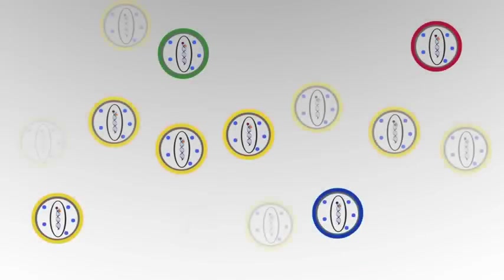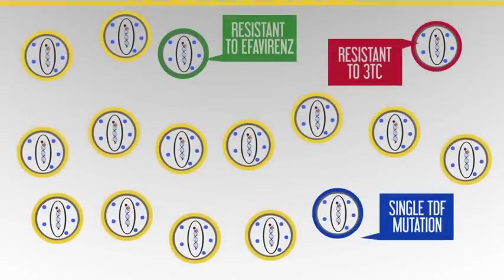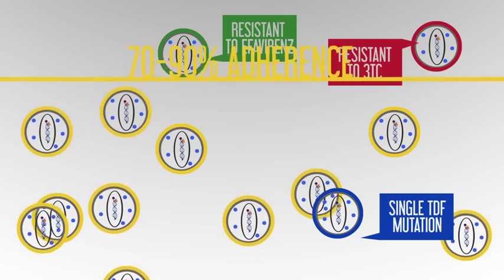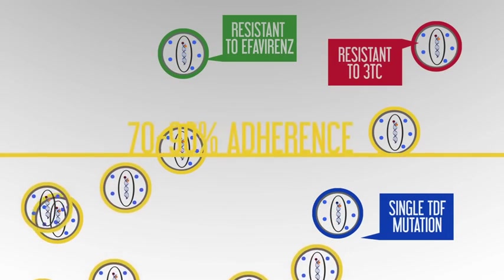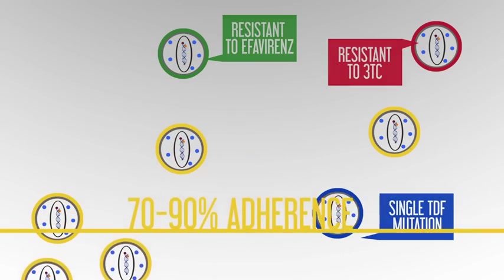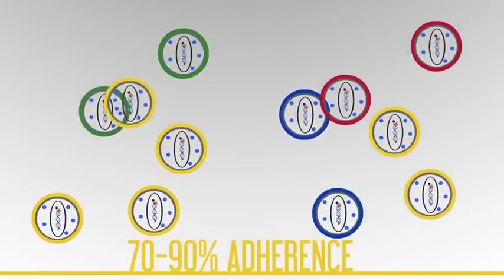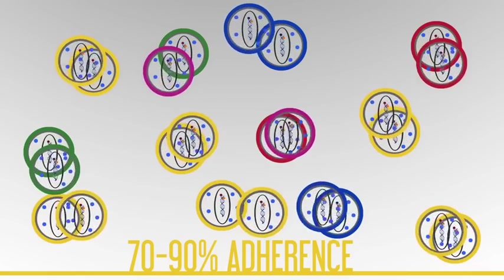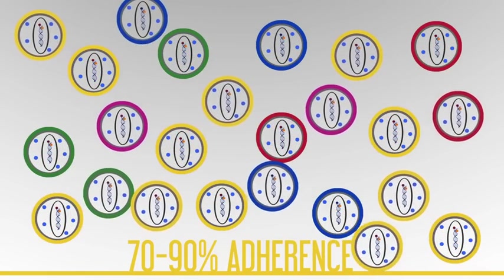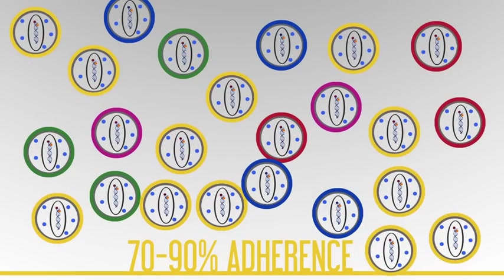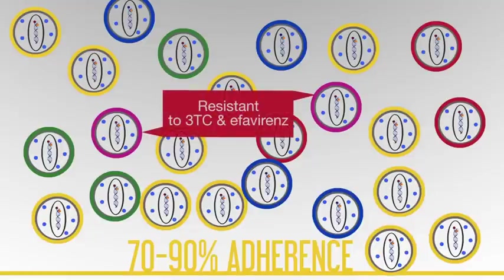If we have the same viral pool to start with, but people take the antiretrovirals that's allowing subtherapeutic drug levels, so the adherence is between 70% to 90%, we get the virus is allowed to replicate in the presence of drug. So those viruses that have single mutations definitely have a growth advantage, and they can also replicate and develop more mutations, and we get the pink viruses which have mutations to both 3TC and efavirenz, and we develop multi-drug resistance by allowing that virus to replicate while we are taking medication.